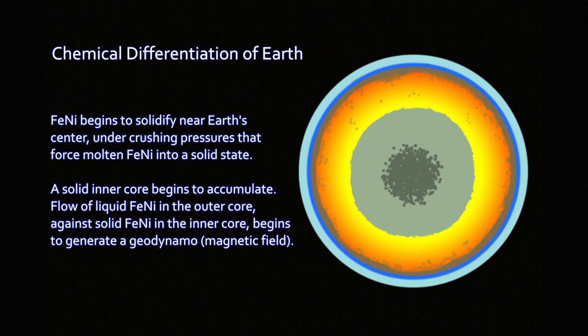But slowly, as the crust and the outer parts of the Earth solidify, and the oceans fill up, solid crystals of iron-nickel begin to form in the core. Because at the core of the Earth, in the center of the Earth, it's very hot, but it's also the highest pressures attainable inside the Earth.